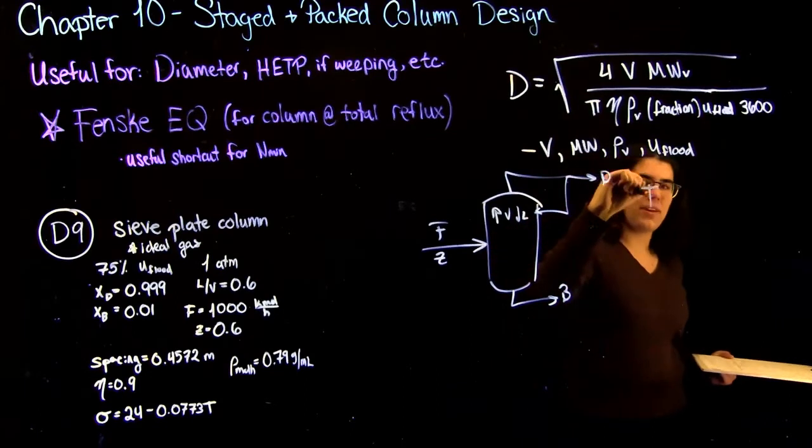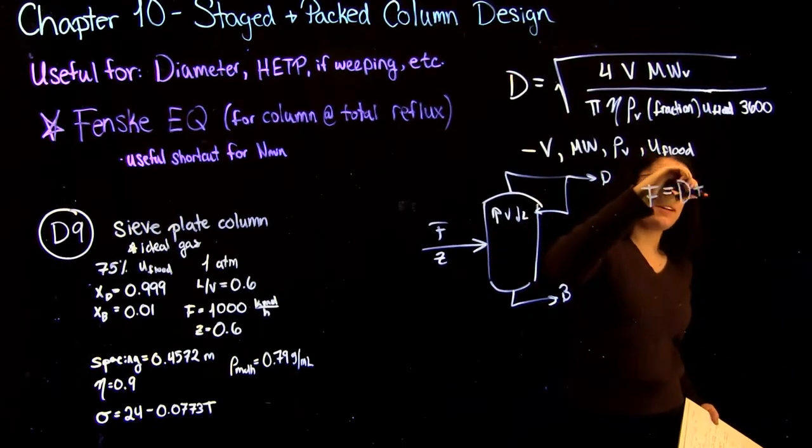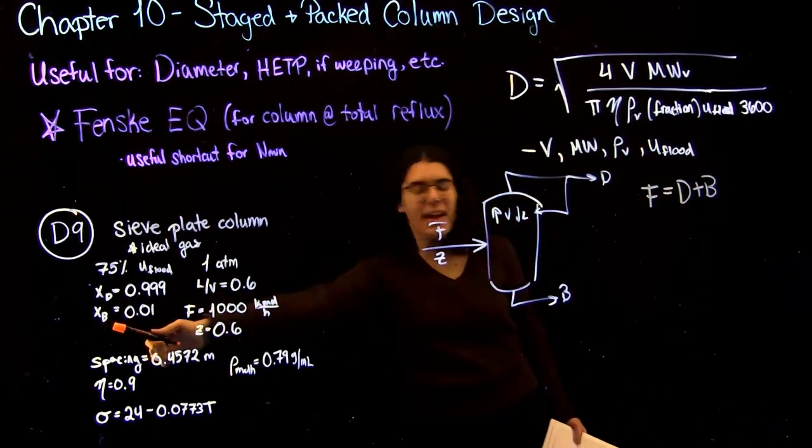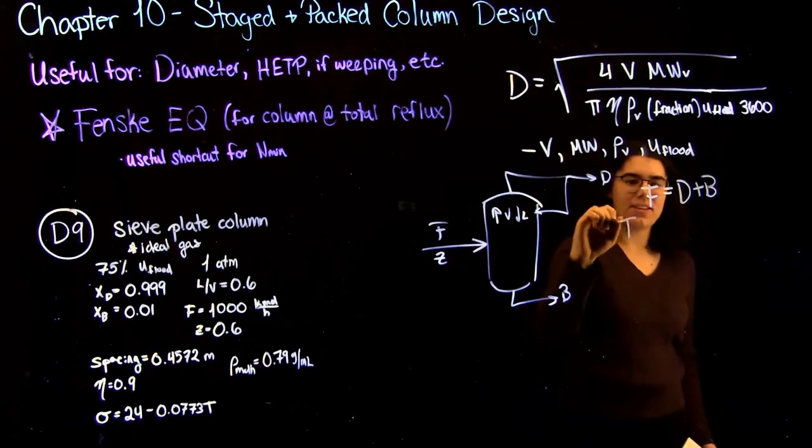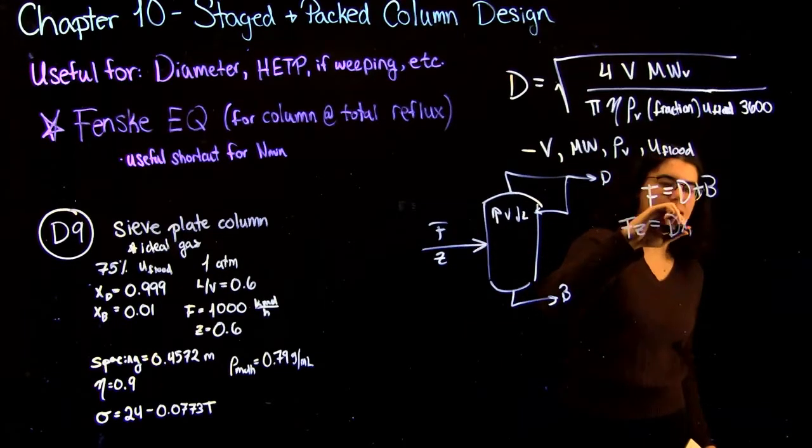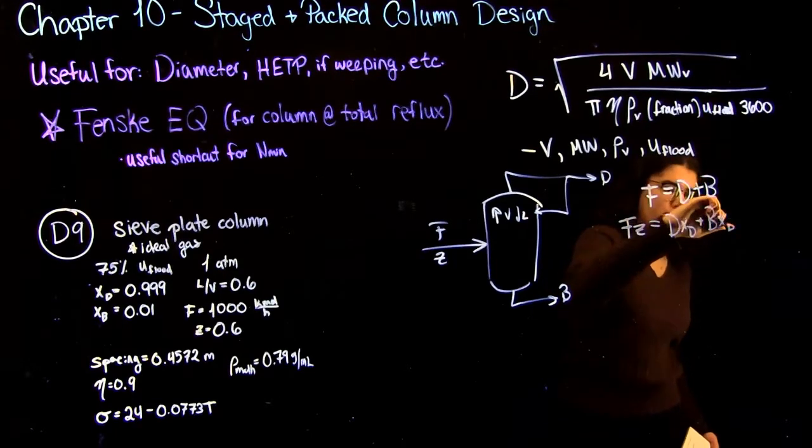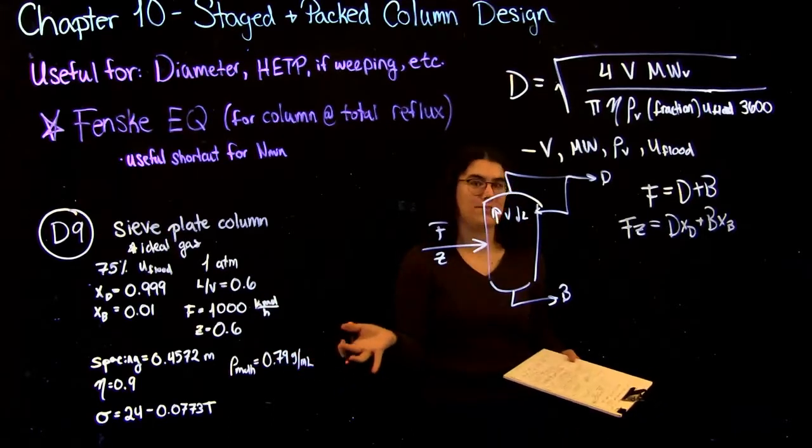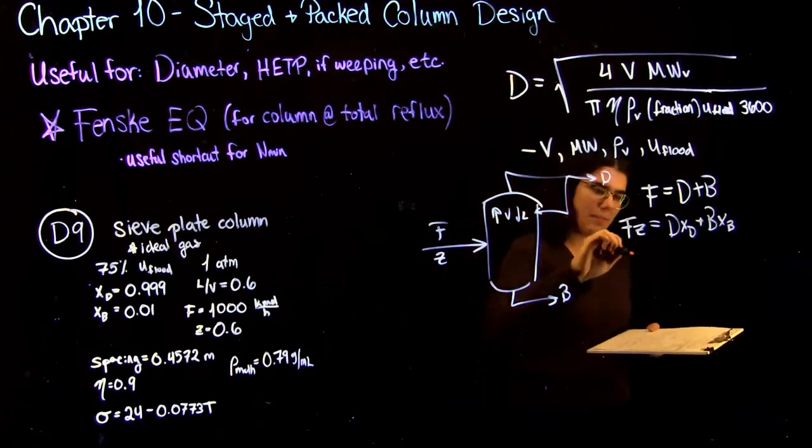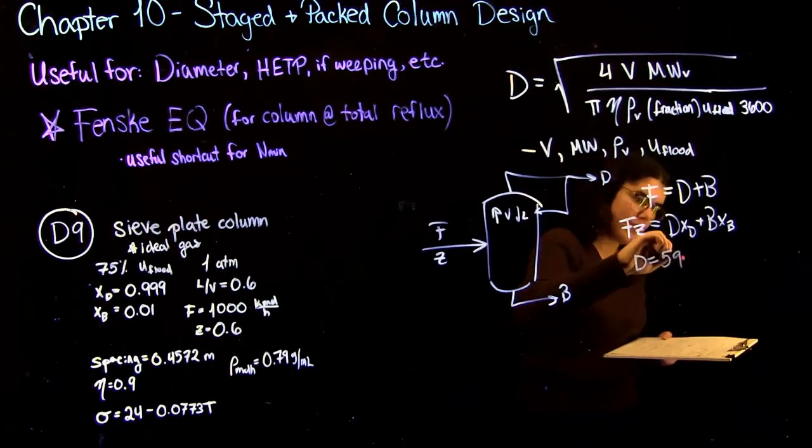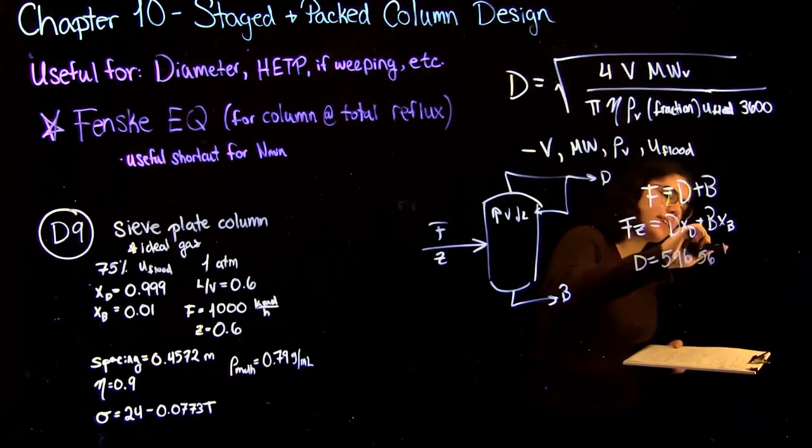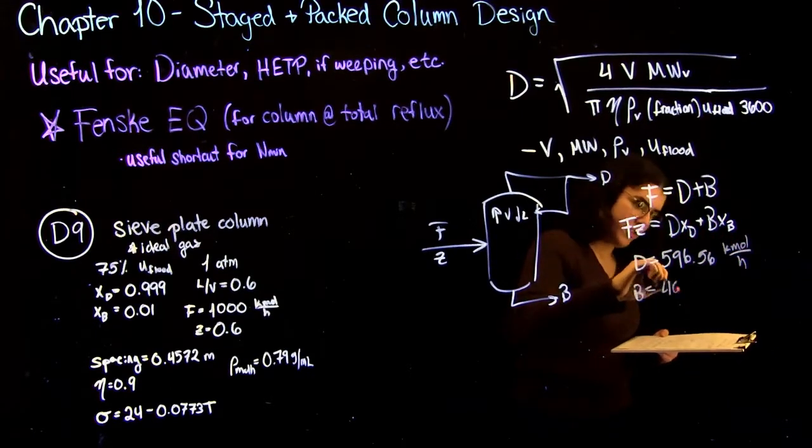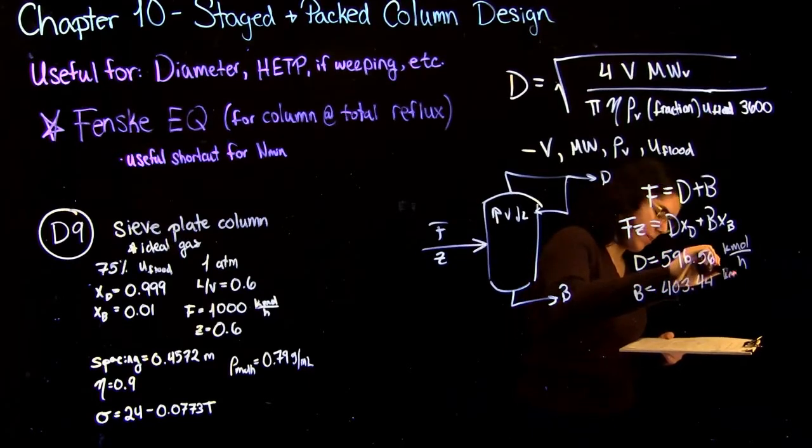So the first thing we're going to do is find D and B so that we can then focus on finding V. If you just do your overall mass balance of F equals D plus B, and the same thing for your component balance, because you're given the composition of your distillate and your bottoms in the question, you can just do F*z equals D*x_D plus B*x_B. And I'm not going to show you the step-by-step of this, because I'm sure by now in the course you've done it loads of times. But if you do this, you'll find that D equals 596 kilomoles per hour, and B equals 403.44 kilomoles per hour.